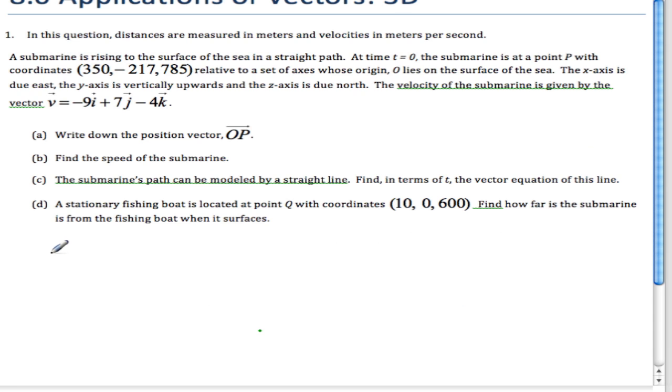Okay, so for this problem, it's a submarine question in three dimensions. Distances are in meters and velocities are meters per second. The submarine rises to the surface of the sea in a straight path. At time t equals zero, the submarine is at point P with coordinates (350, -217, 785) relative to a set of axes whose origin lies on the surface of the sea.